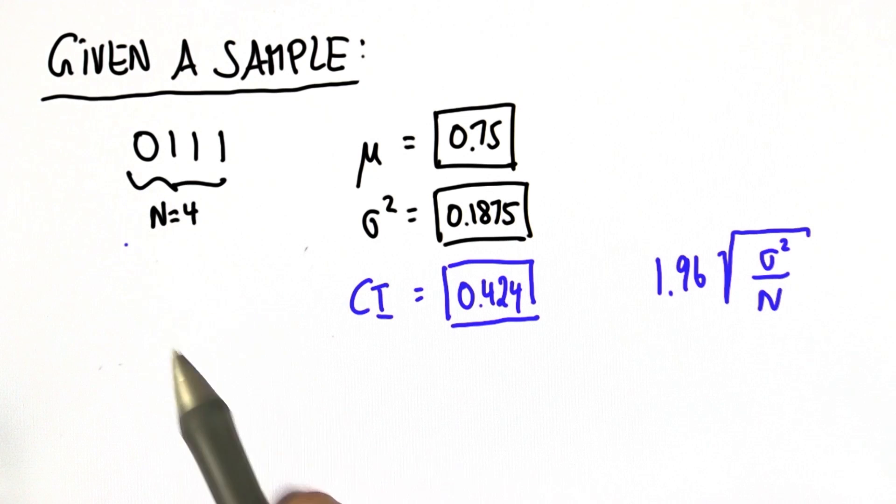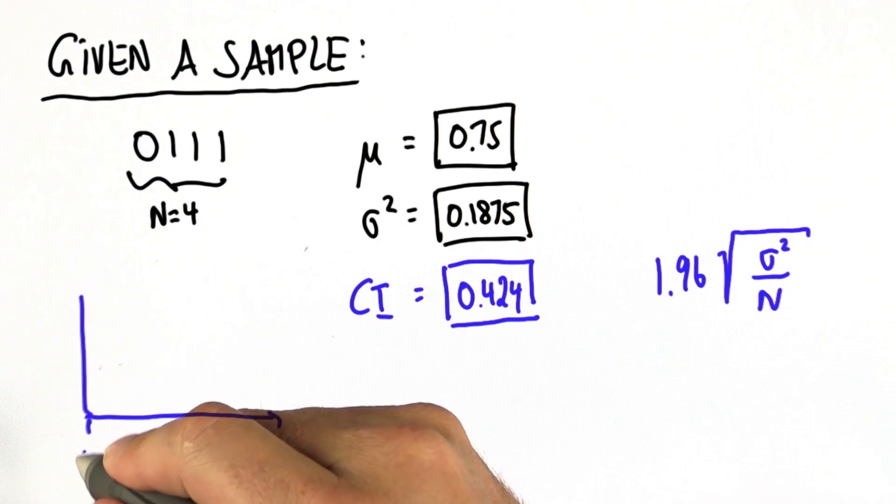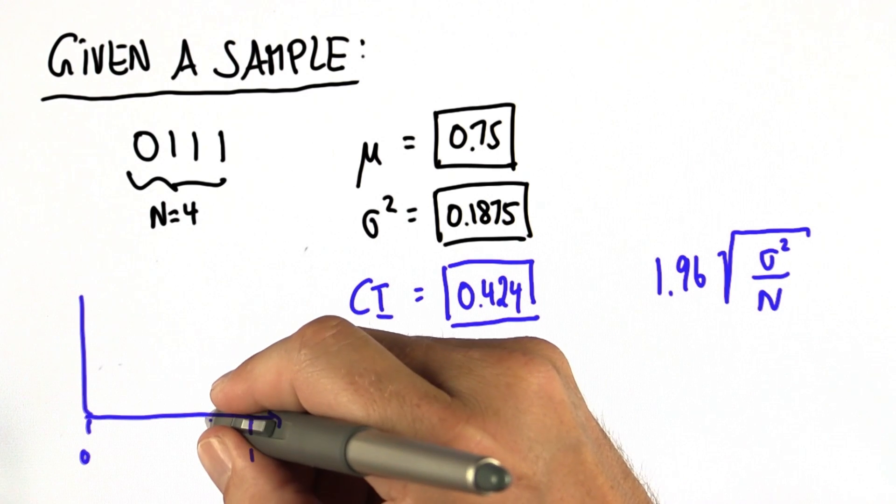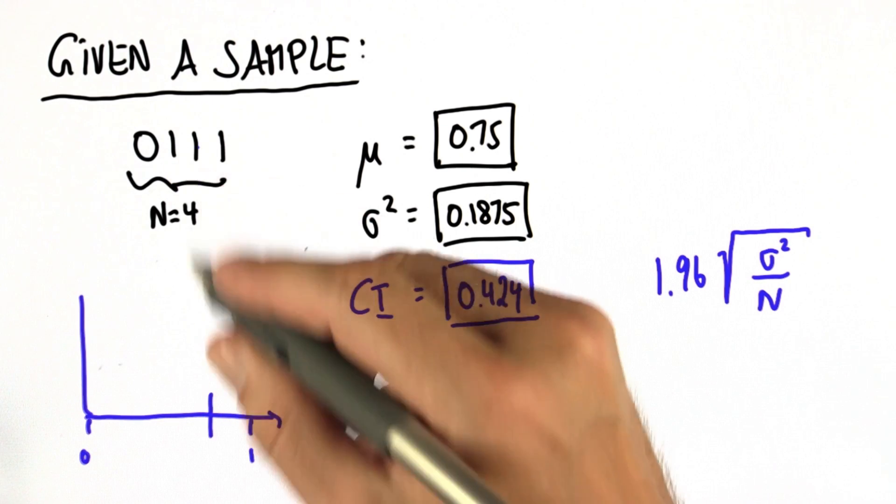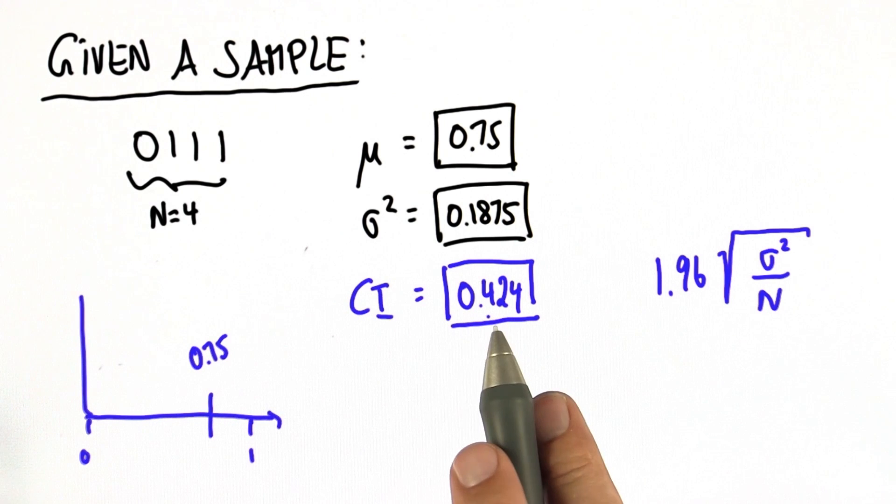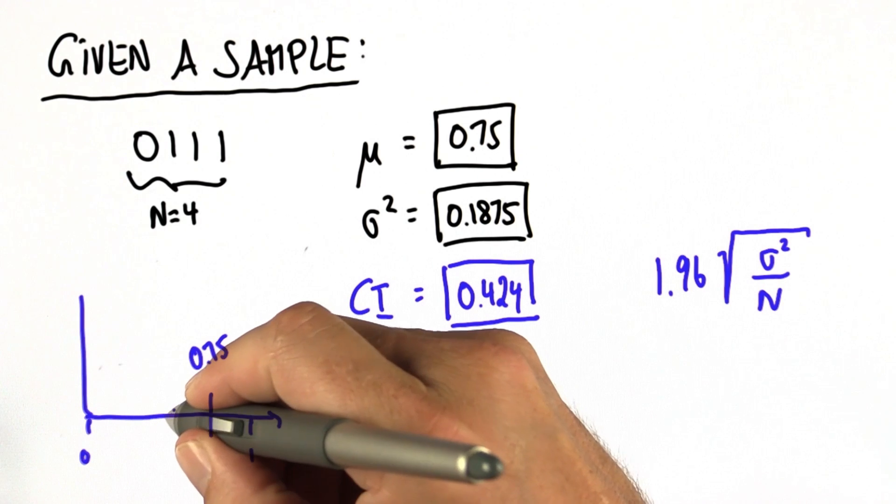So for this sample, that means we would say between the probability 0 and 1, we believe most likely the coin is biased and has a 0.75 probability. But we aren't quite sure. We have a confidence interval that's 0.42 wide on both sides.